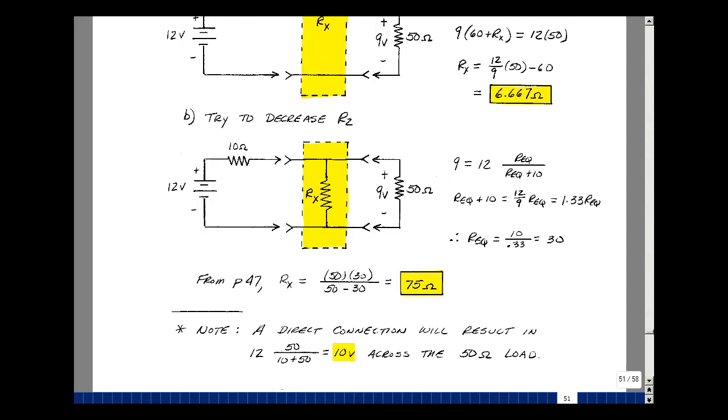We also had a handy formula on page 47 of this chapter saying that if we knew the equivalent resistance and we wanted to pick one of the two resistances, that it was equal to the product over the difference. So let's try that. So 50 ohms times the 30 I want over the 50 minus the 30 is 75.